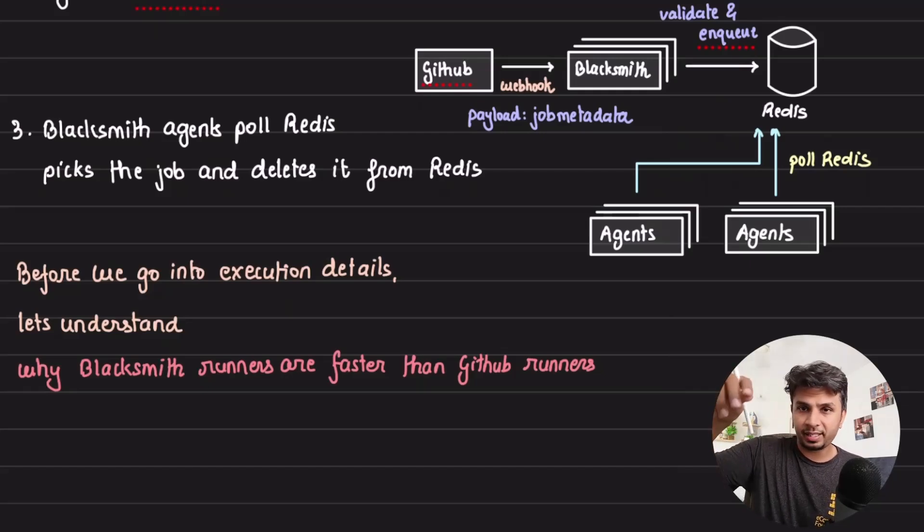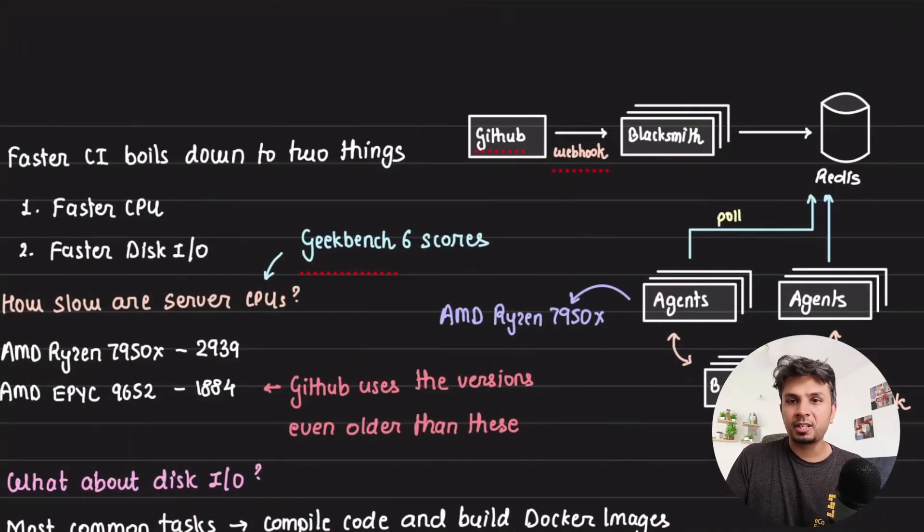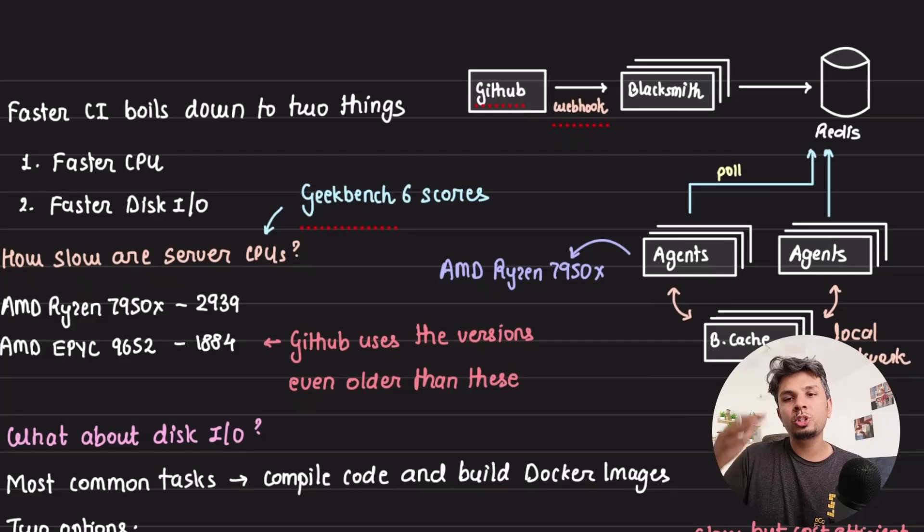Now before we go into the details of execution, let's understand the secret sauce on why Blacksmith runners run faster than GitHub runners. To put it in simple terms, the whole idea is to use better hardware to run the jobs. But you would say, hey if better hardware, more cost, then why is it cheaper?